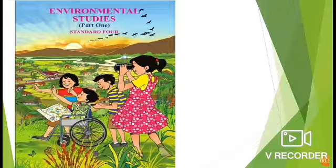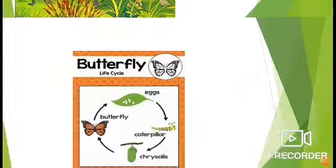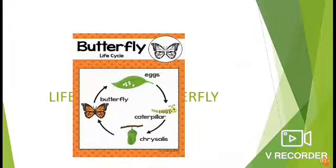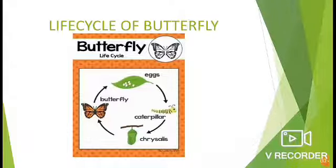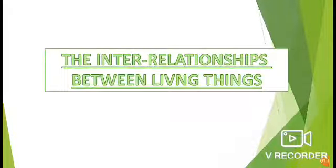Welcome, class 4 learners. The subject for today is EBS 1. In the first chapter, we have seen the life cycle of a butterfly. Children, do you see the life cycle here — how the egg changes into a butterfly with the help of different things in the environment? Today we will begin with our second chapter: the interrelationships between living things.